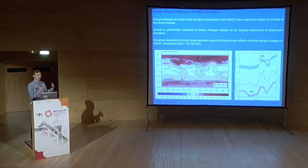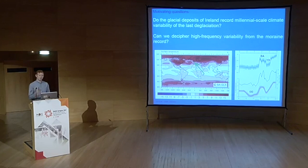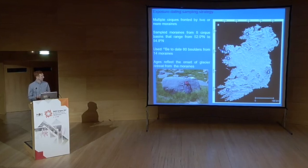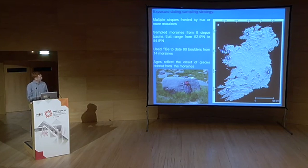Key research questions: do the glacial deposits of Ireland actually record millennial-scale climate variability over the last deglaciation, and can high-frequency variability be deciphered from the moraine record? To address these, cosmogenic surface exposure dating (10Be) was applied to cirques across all of Ireland, targeting cirque basins fronted by two or more moraines to provide both chronological constraints and stratigraphic relationships. Eight cirque basins were sampled, ranging from 52°N to 54°N.